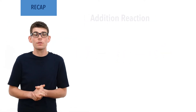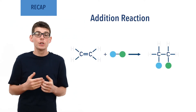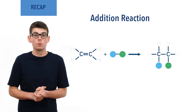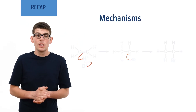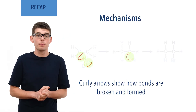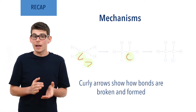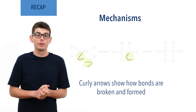Addition reactions occur when groups or atoms are added to a molecule and only one product is formed. In organic chemistry we show the possible steps occurring in a reaction by using mechanisms. Curly arrows are used to show how a pair of electrons moves to break and form bonds, and the arrow heads always point towards where the electron pair is moving to.